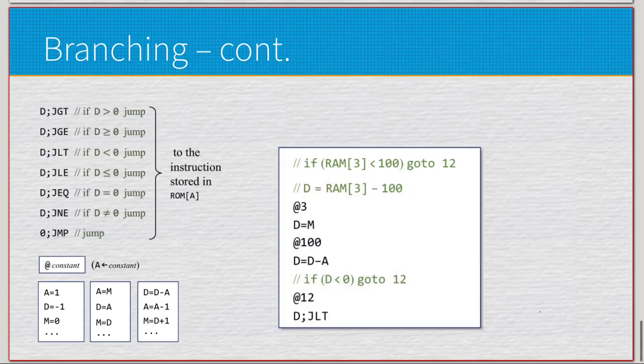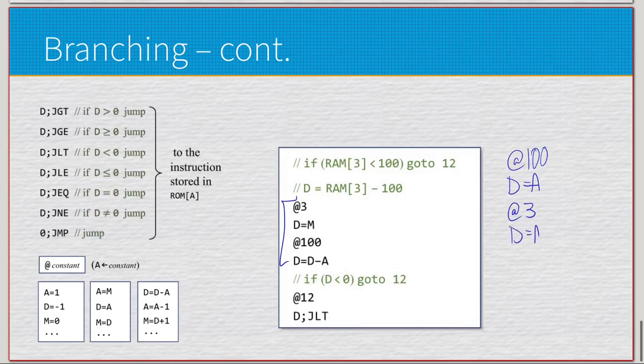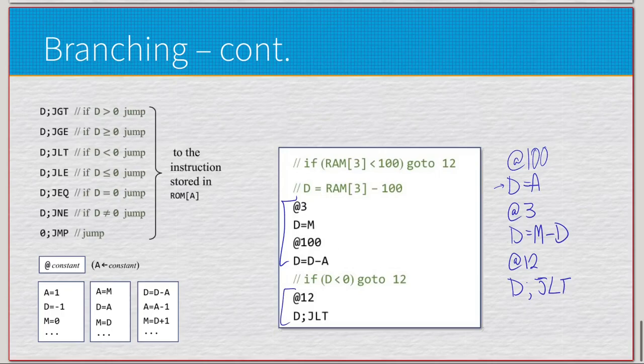Let's take a look at a different way of doing it. This is pretty much the same thing except the math to get there is kind of reversed. I did @100, D equals A to get the finite value, then @3 to go to RAM[3], D equals M minus D. Their comparison is a little bit different - they go to RAM[3] first and then get the constant value. There's no right or wrong approach here, there's no optimal or suboptimal approach. It is practically the same, just a different approach, and the branch instruction is identical.